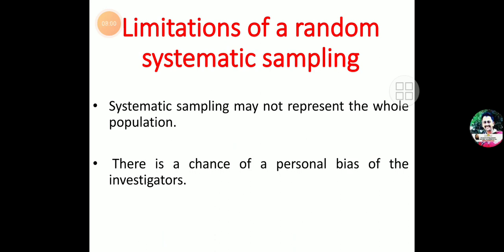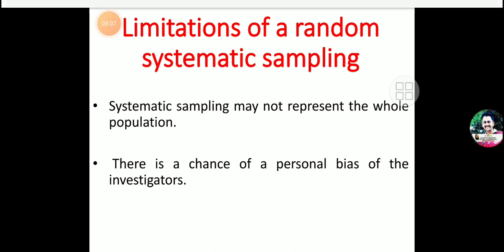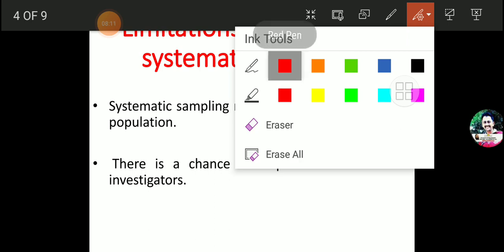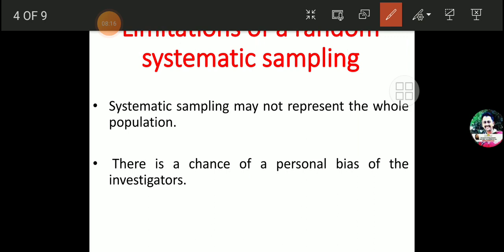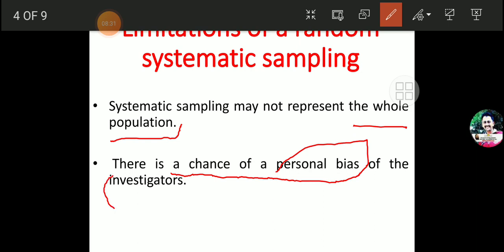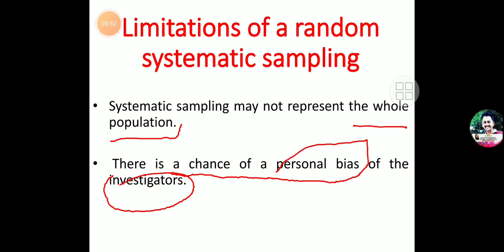Although such merits are there, there are also two limitations of systematic random sampling. First, it never represents the whole population — it does not represent the complete population. Another limitation is that there is a chance of personal bias on the part of the investigator. These two are the demerits and limitations of systematic random sampling.